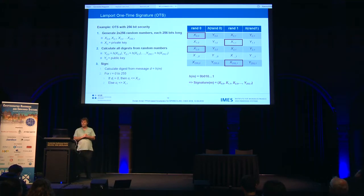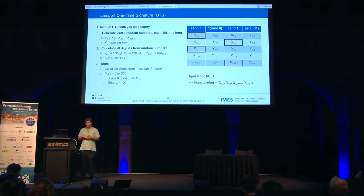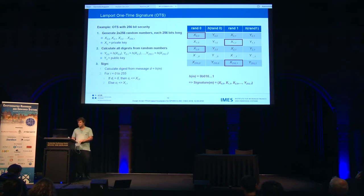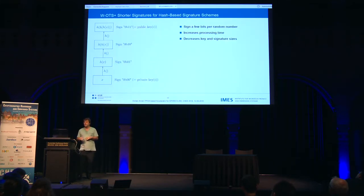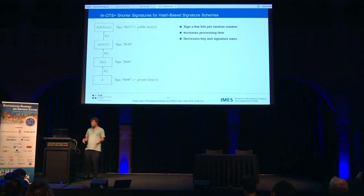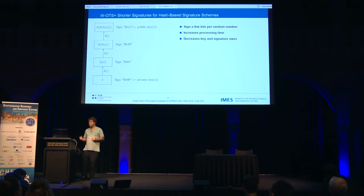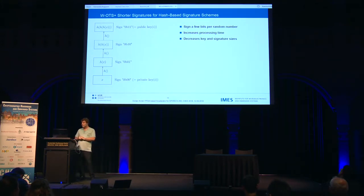The problem is that we can only use such a key pair once. If I make a second signature, already 75% of my random numbers are in the public domain. In other words, you may find a digest that corresponds to the random numbers already public. A later scheme improved this so that instead of needing 512 random numbers we need much less, and we can sign more than one bit per random number. It is paid with a bit more computation time, but it really shrinks the key sizes and, more importantly, the signature sizes.